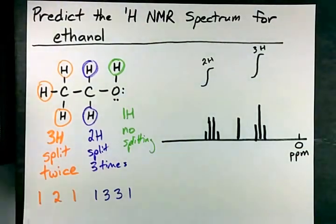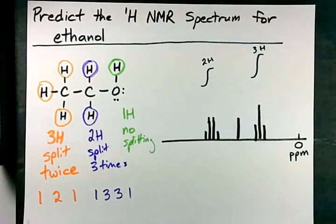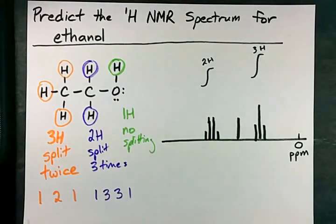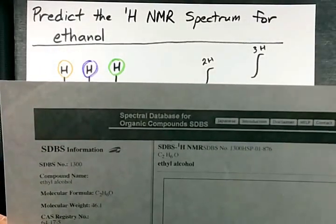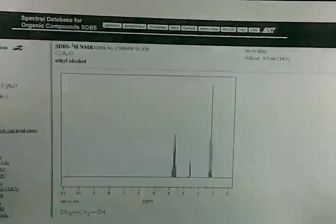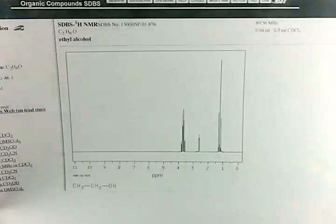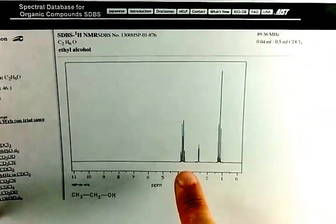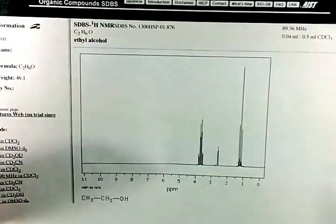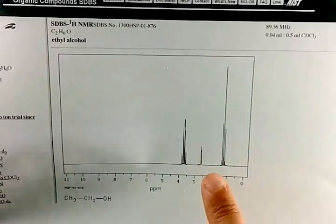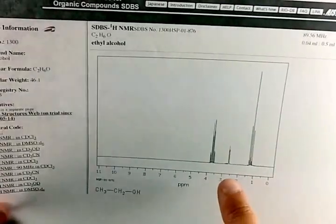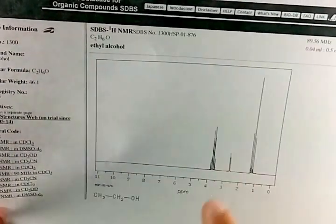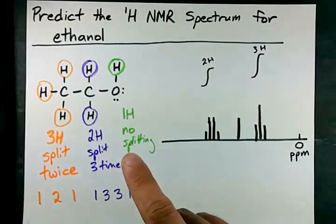Now I downloaded the spectrum of this molecule from something called SDBS. They say you have to reference it when you use it, so there you go. And here's the NMR spectrum. Look at that. We've got 1, 3, 3, 1 approximately for my peaks here. We've got 1, 2, 1, which corresponds to these guys. And then we have a little tiny nub here, not split at all, for the OH.